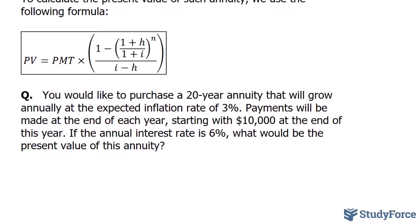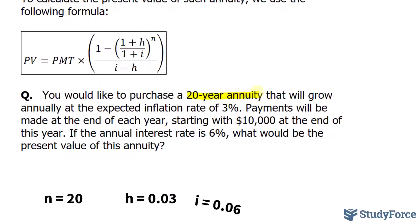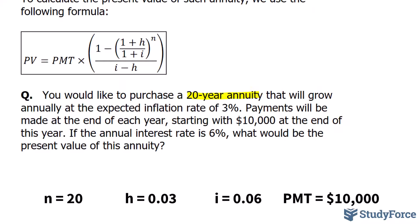The 20 years represents the total number of periods, so that will be our value of N. Our value of H will be 3%, which translates to 0.03. I will represent 0.06, and PMT will be 10,000. With that being said, let's go ahead and apply those values into the formula.